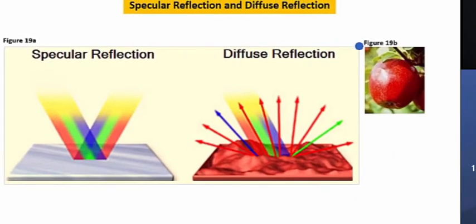For example, if we look here at figure 19B, when white light hits an apple, for instance, primarily red wavelengths are reflected, while much of the other wavelengths of light are going to be absorbed.